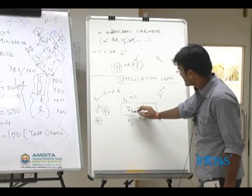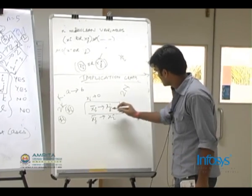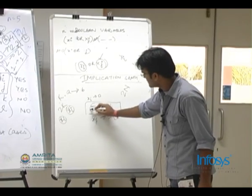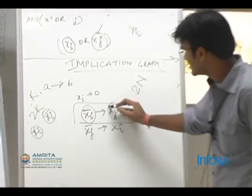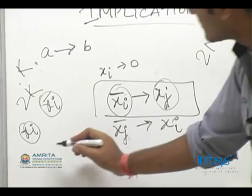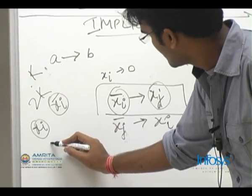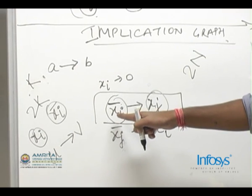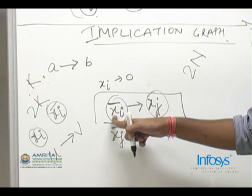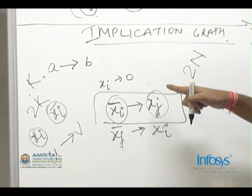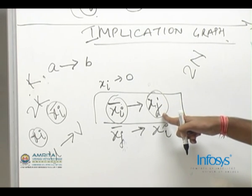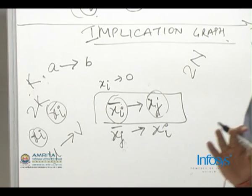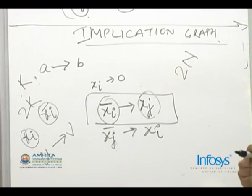If there exists an implication from XI complement to XJ then draw a directed edge from the corresponding vertices. So the directed edge from the vertex corresponding to XI complement to the vertex corresponding to XJ. This way you'll end up with a graph.